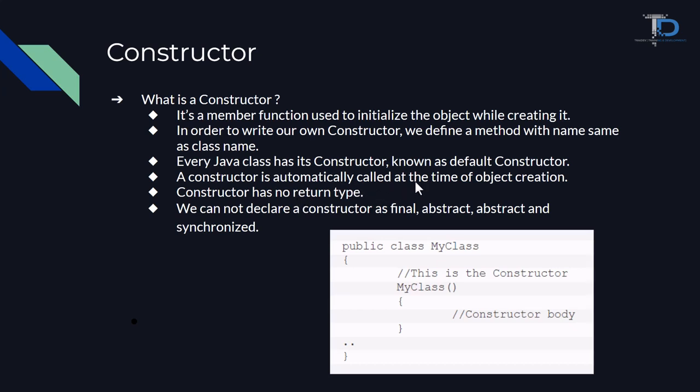A constructor is automatically called at the time of object creation. Also, the constructor has no return type — no final, no abstract, no synchronized — we can't use any kind of keyword with it.